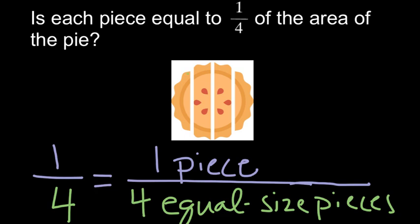Let's look at the pie. I think it's pretty clear that these pieces on the end are not equal. They are smaller than the two pieces in the middle.